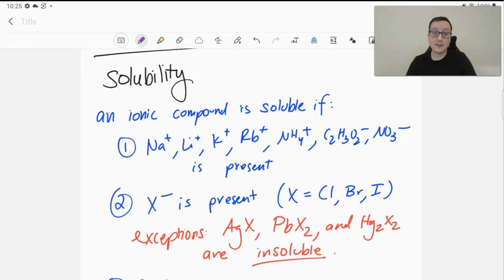We will assume an ionic compound is soluble if any of the following three rules is true. Rule number one: sodium, lithium, potassium, rubidium, ammonium, acetate, or nitrate is present.